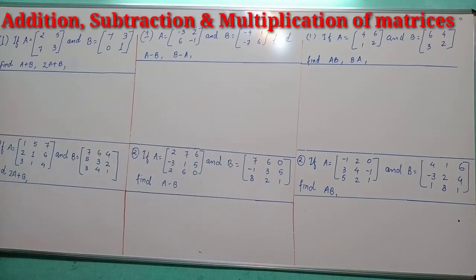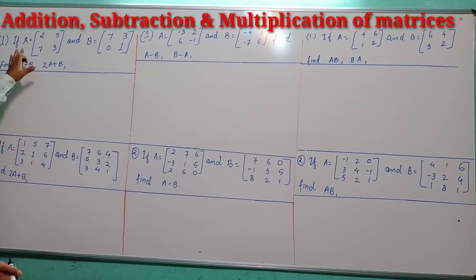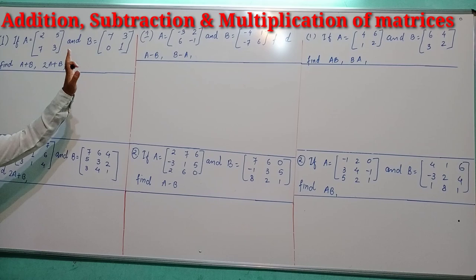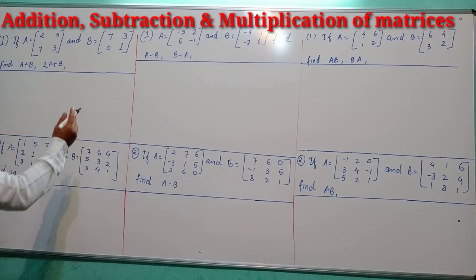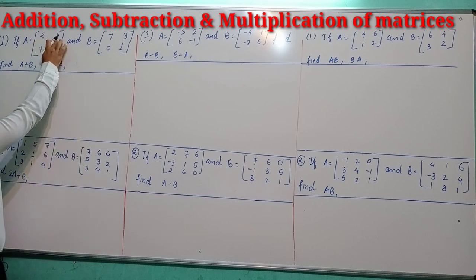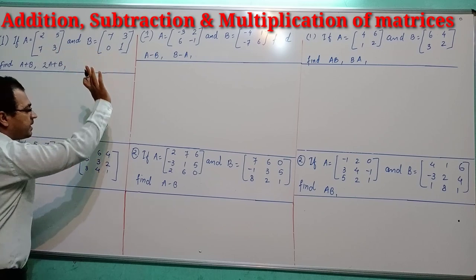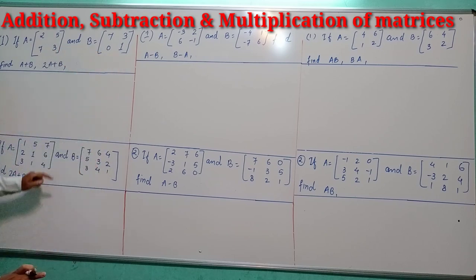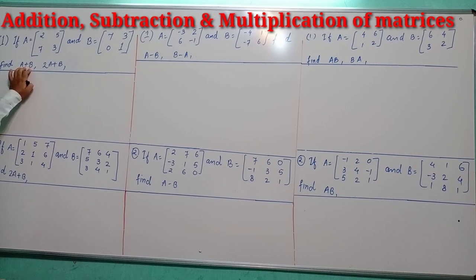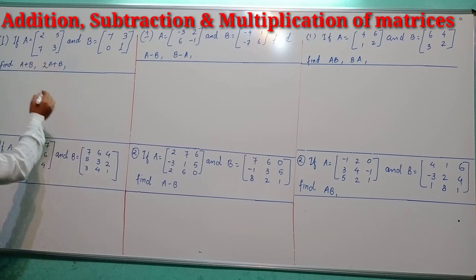You can see that we have matrices A and B, both are 2 by 2 matrices. There are 2 rows and 2 columns in matrix A, and the same in matrix B. Here we have to find out A plus B and 2A plus B.